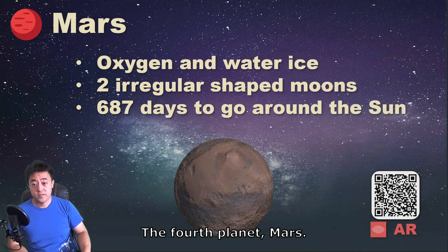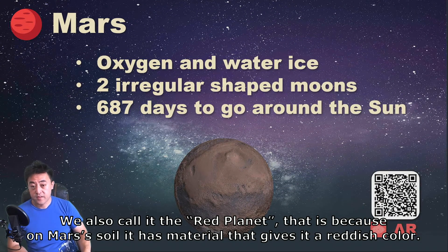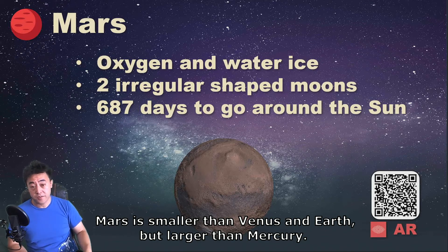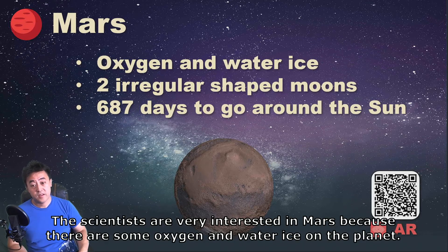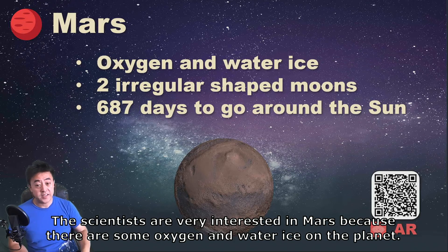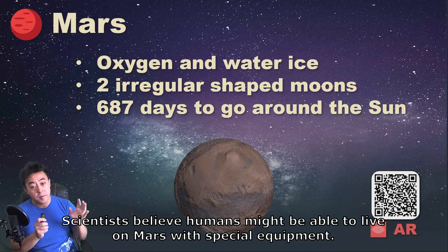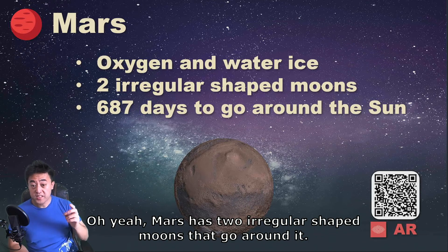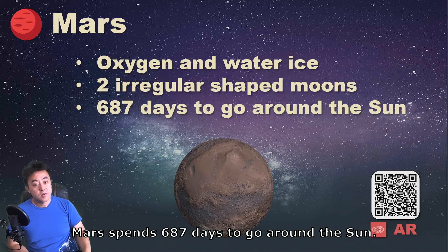The fourth planet is Mars. We also call it the red planet, because the soil on Mars has materials that give it a reddish color. Mars is smaller than Venus and Earth but larger than Mercury. Scientists are very interested in Mars because there is some oxygen and water ice on the planet. Scientists believe humans might be able to live on Mars with special equipment. Mars also has two irregular-shaped moons that go around it, and it spends 687 days to go around the sun.